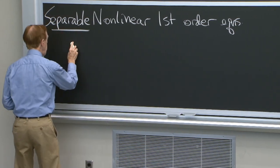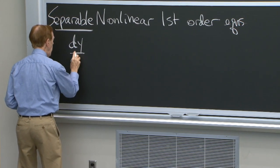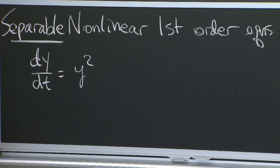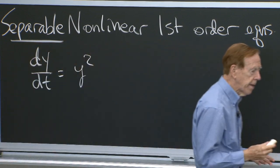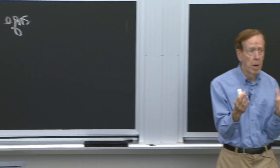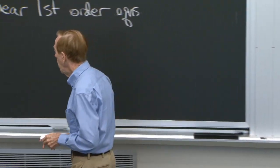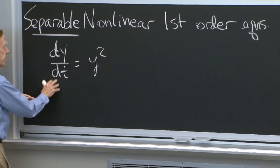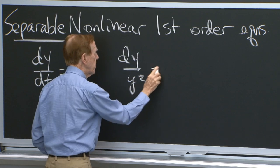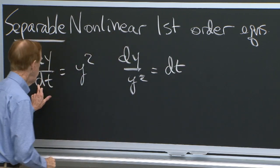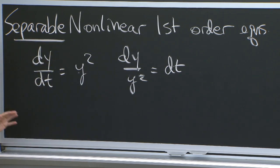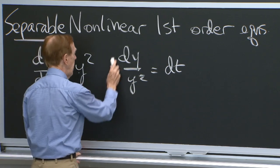One example would be the simplest nonlinear equation I can think of — with a y squared. Here's the trick: this is the separable idea. We can separate — put the y's on one side and the t's on the other. So I write this as dy over y squared equal dt. I put the dt up and brought the y squared down. So now they're separated, and I'll make sense out of that by integrating.